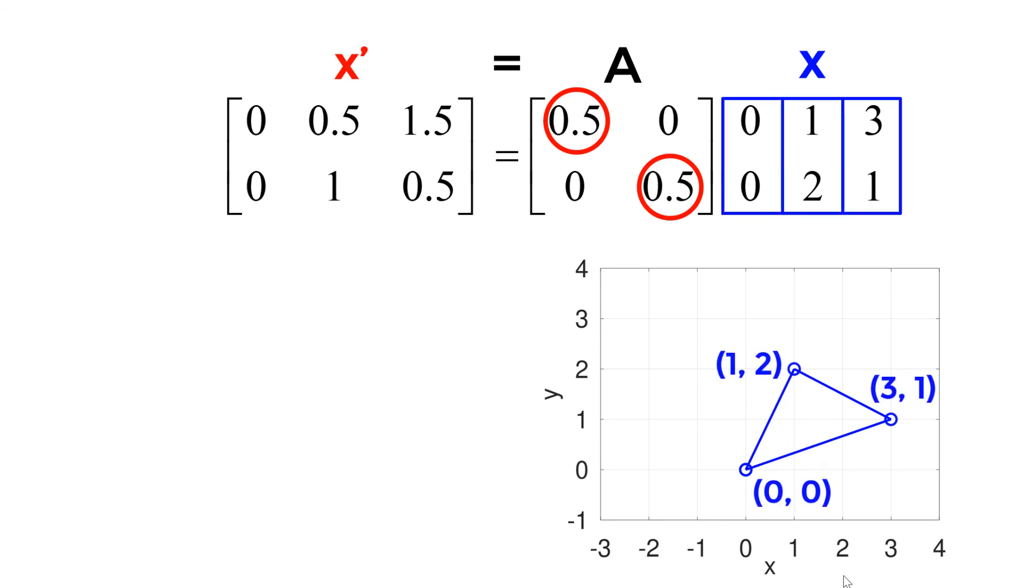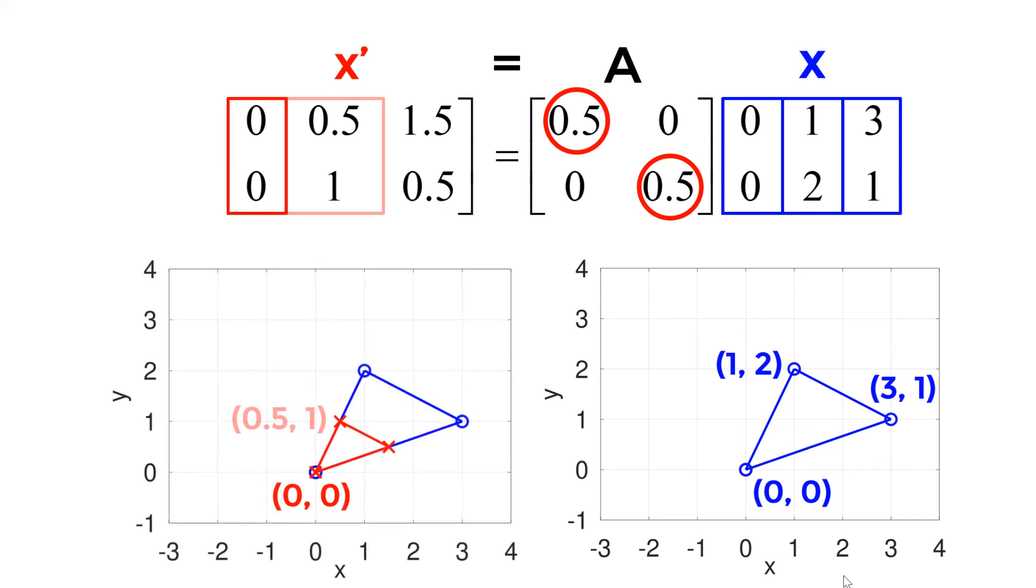Once you multiply A by x, your new coordinates for the shrunken triangle becomes (0, 0), (0.5, 1), (1.5, 0.5), which are shown in the figure as the red points and lines.